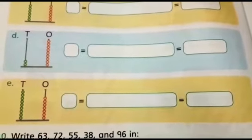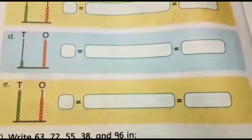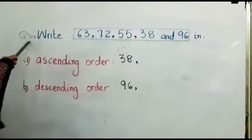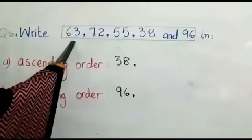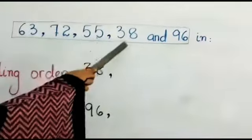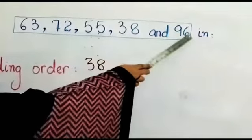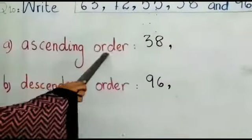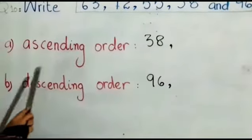So my dear students, question D and E is your homework. Question 10. Write 63, 72, 55, 38 and 96 in ascending order and in descending order.